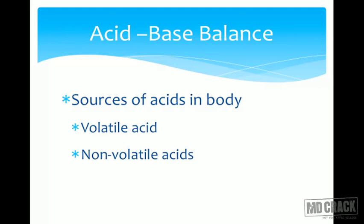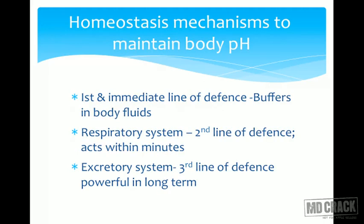Non-volatile acids such as sulfuric acid and phosphoric acid are also produced by the body. These must be taken care of by the kidney only. The kidneys can excrete H+ ions and generate new bicarbonate ions. Non-volatile acids are those which cannot be excreted by the lungs and must be handled by the kidneys.